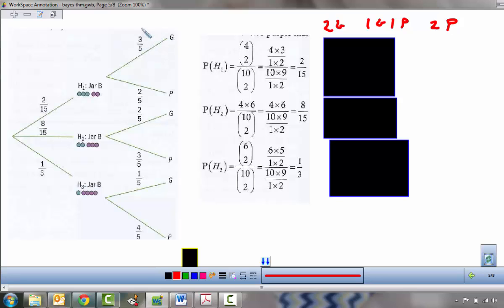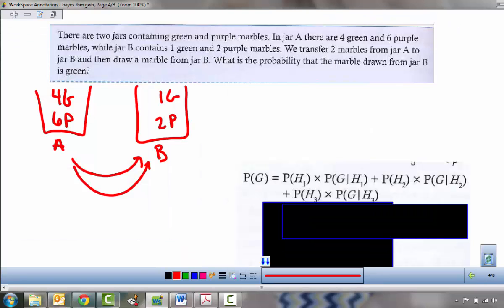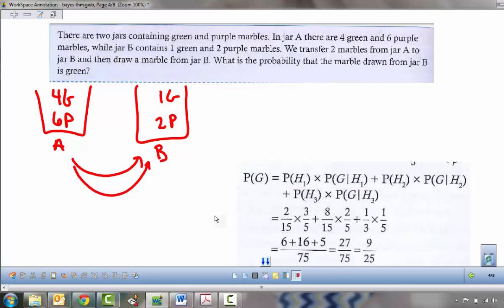Realize that this probability is the probability of green given that hypothesis 1 has occurred. This would be the probability of purple given that hypothesis 1. So let's go back to our total probability formula and see if you can't plug in the correct values to this expansion. We should have two fifteenths times three fifths plus eight fifteenths times two fifths plus one third times one fifth for a total probability of picking a green marble of nine twenty fifths.